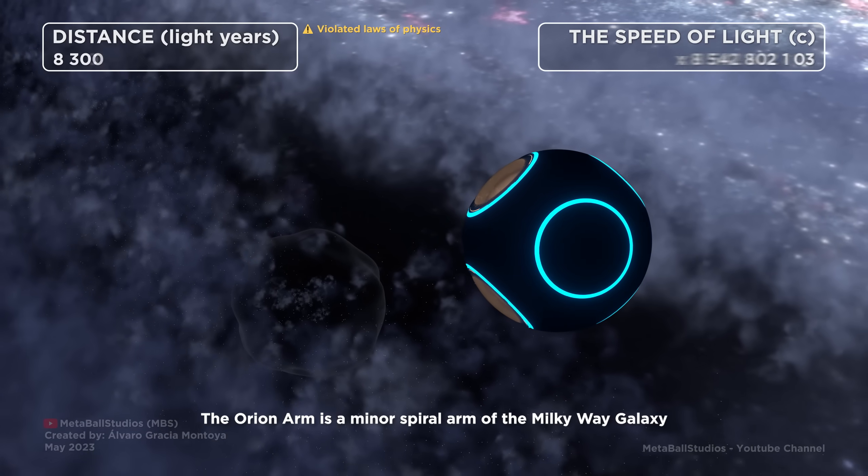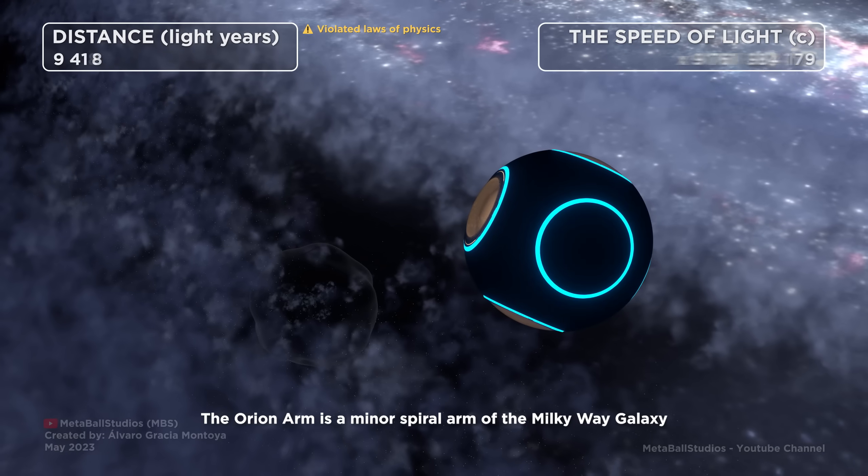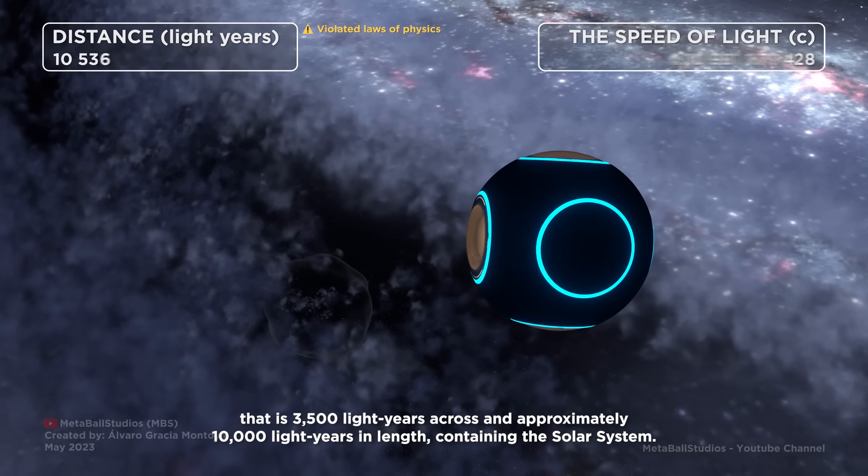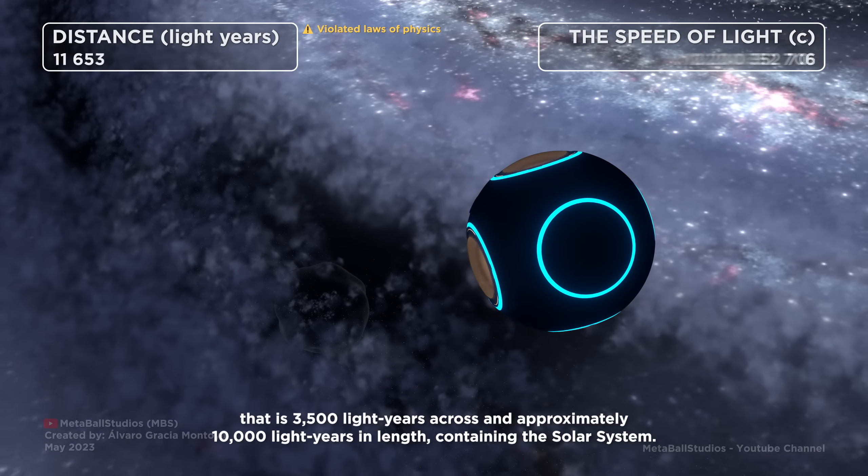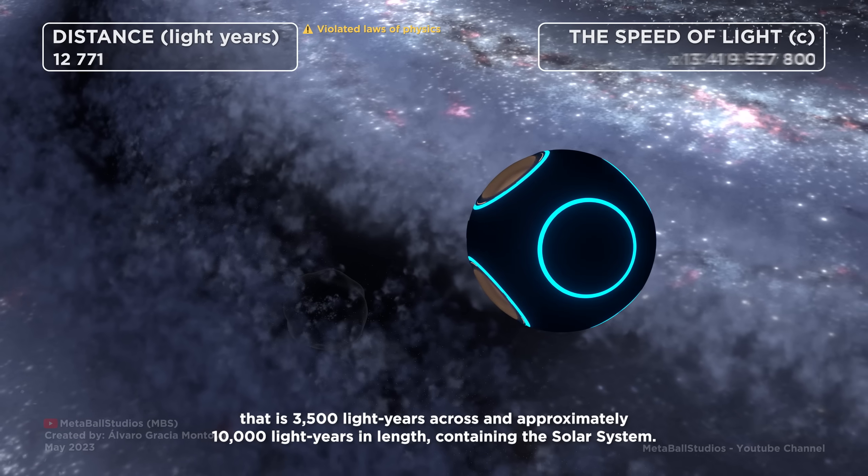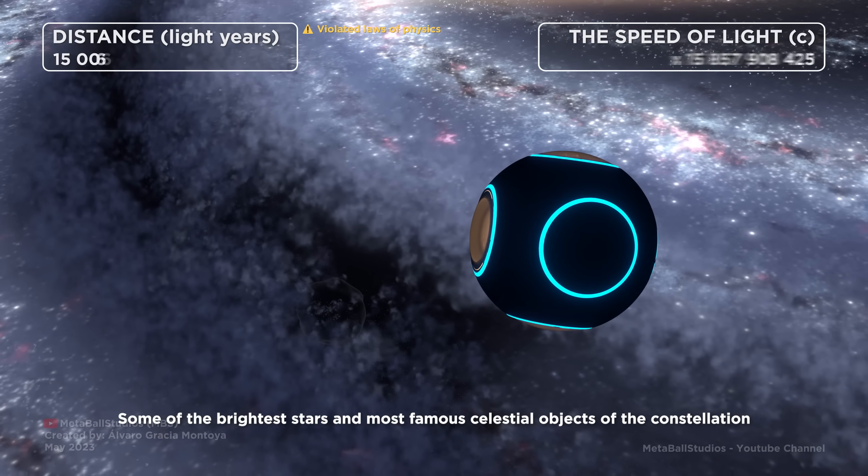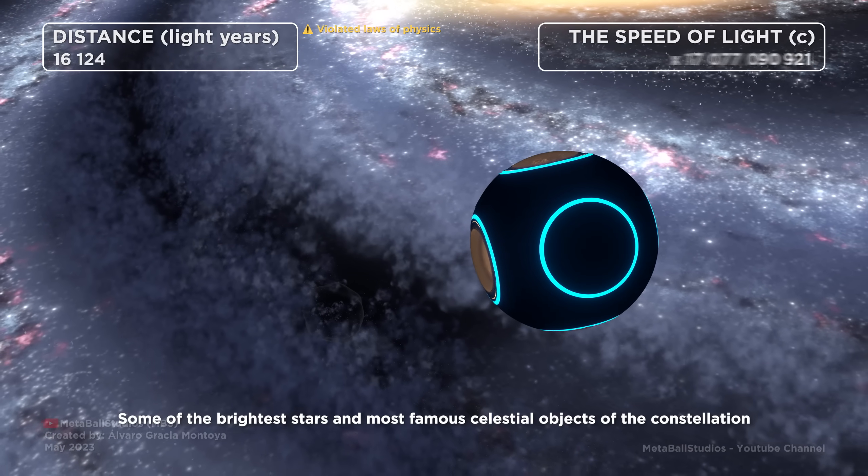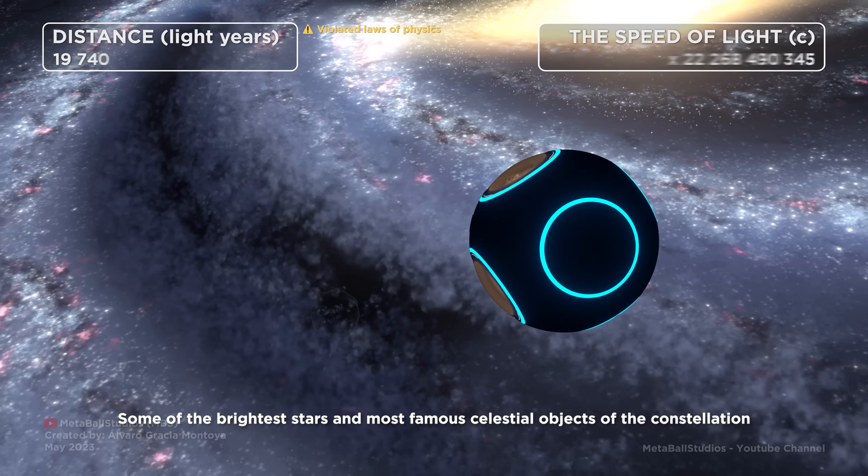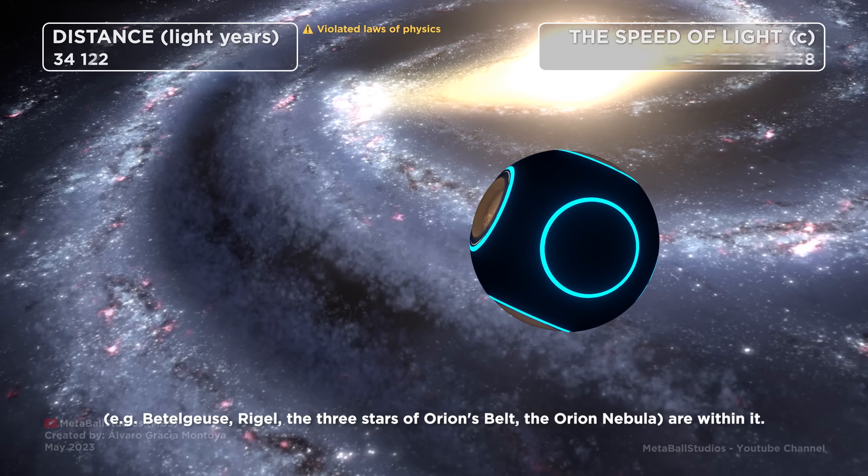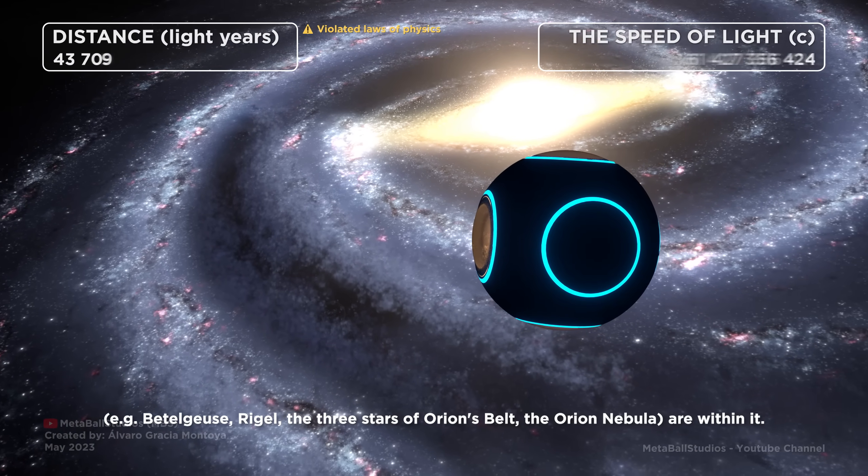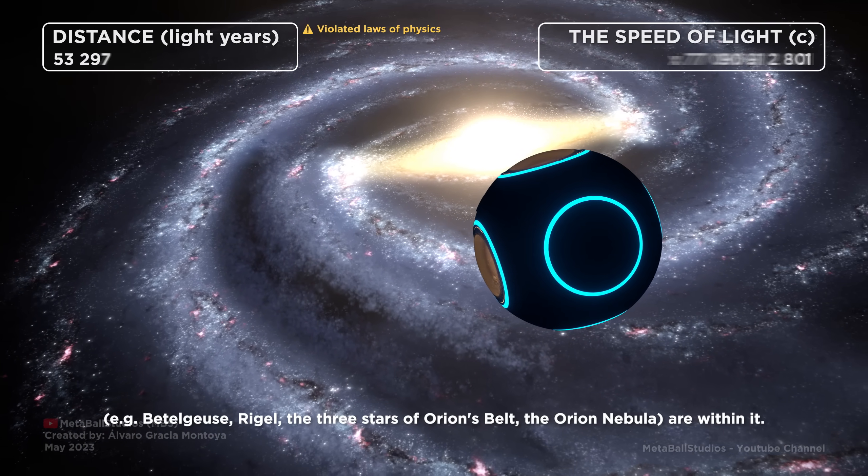The Orion Arm is a minor spiral arm of the Milky Way galaxy that is 3,500 light years across and approximately 10,000 light years in length, containing the solar system. Some of the brightest stars and most famous celestial objects of the constellation, for example, Betelgeuse, Rigel, the three stars of Orion's belt, the Orion Nebula, are within it.